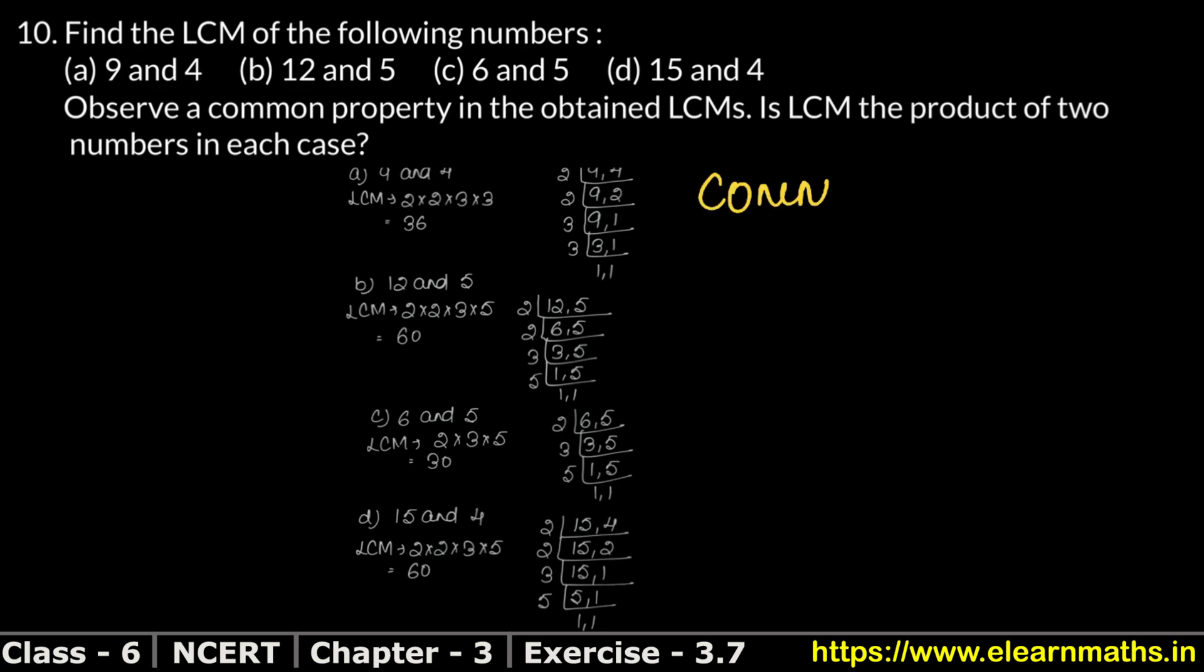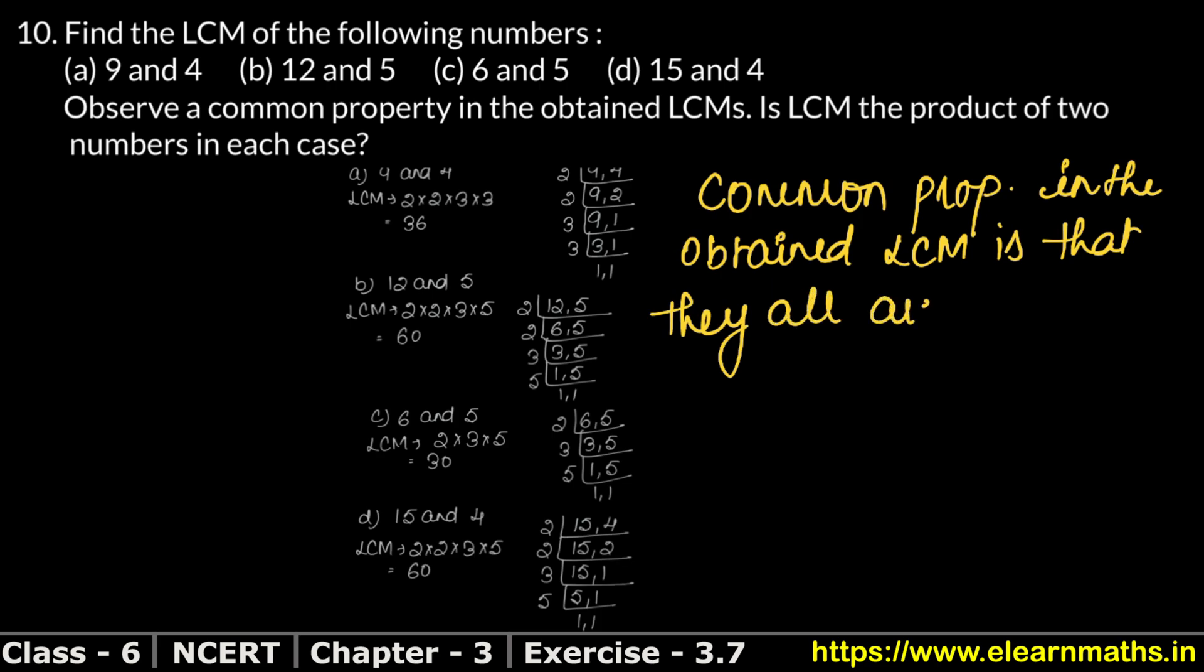So we can write here. Common property in the obtained LCM is that they all are multiples of - we can say multiples of 2, multiples of 3, and multiples of 6. That's it.